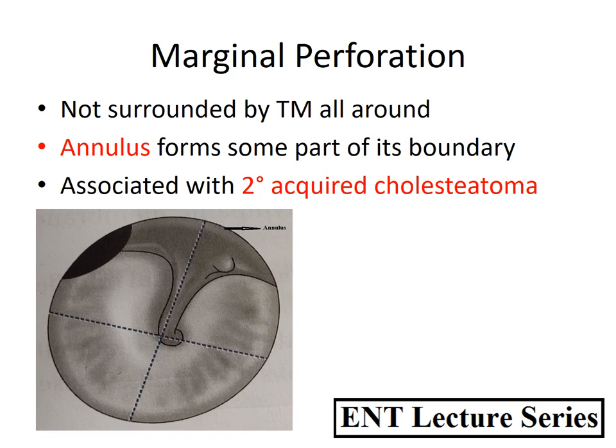Marginal perforation is one which is not surrounded by tympanic membrane on all sides — the annulus forms part of its boundary. It is seen in the posterior superior quadrant and is associated with secondary acquired cholesteatoma, where a pre-existing perforation allows epithelium to migrate into the middle ear. This is a type of atticoantral disease.